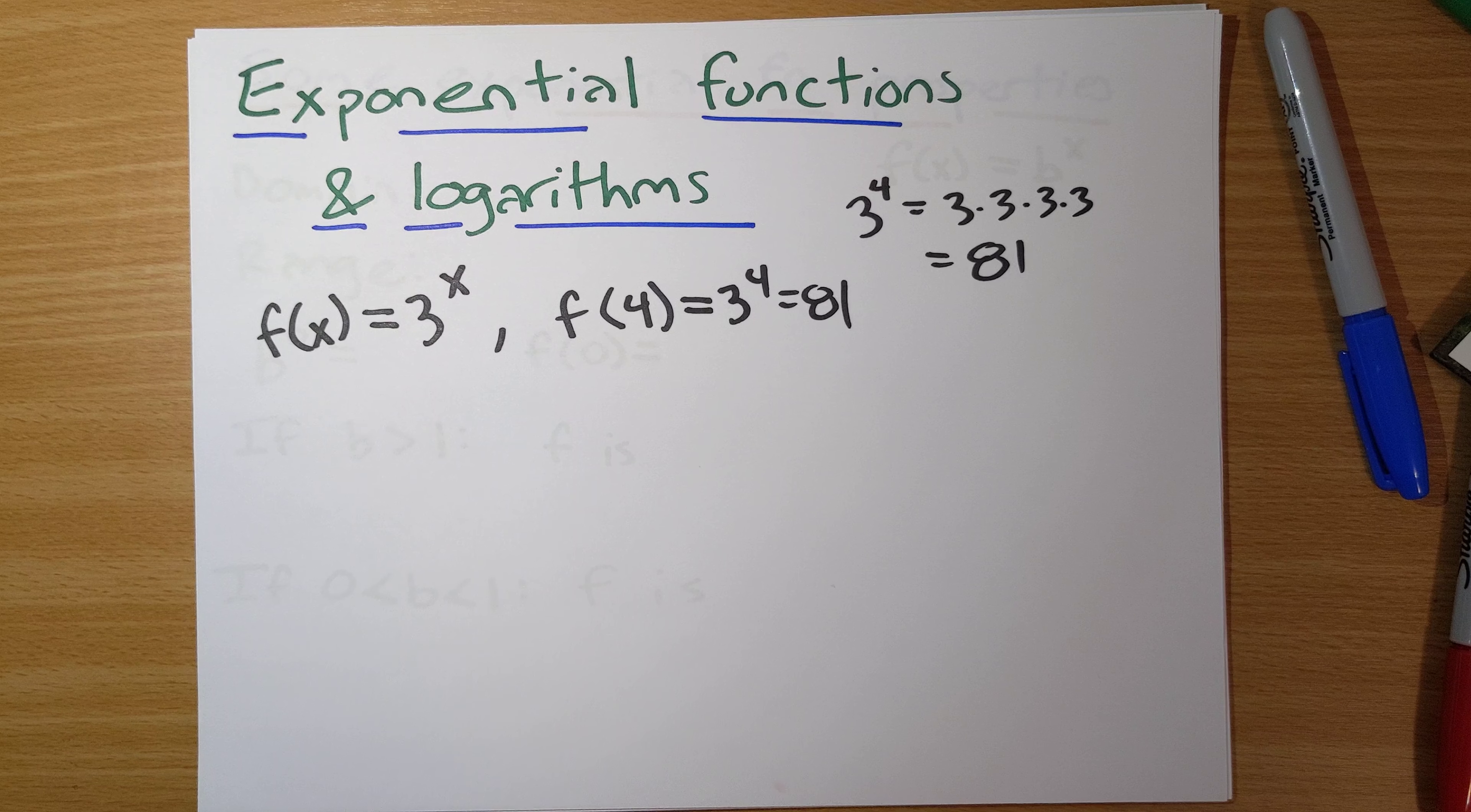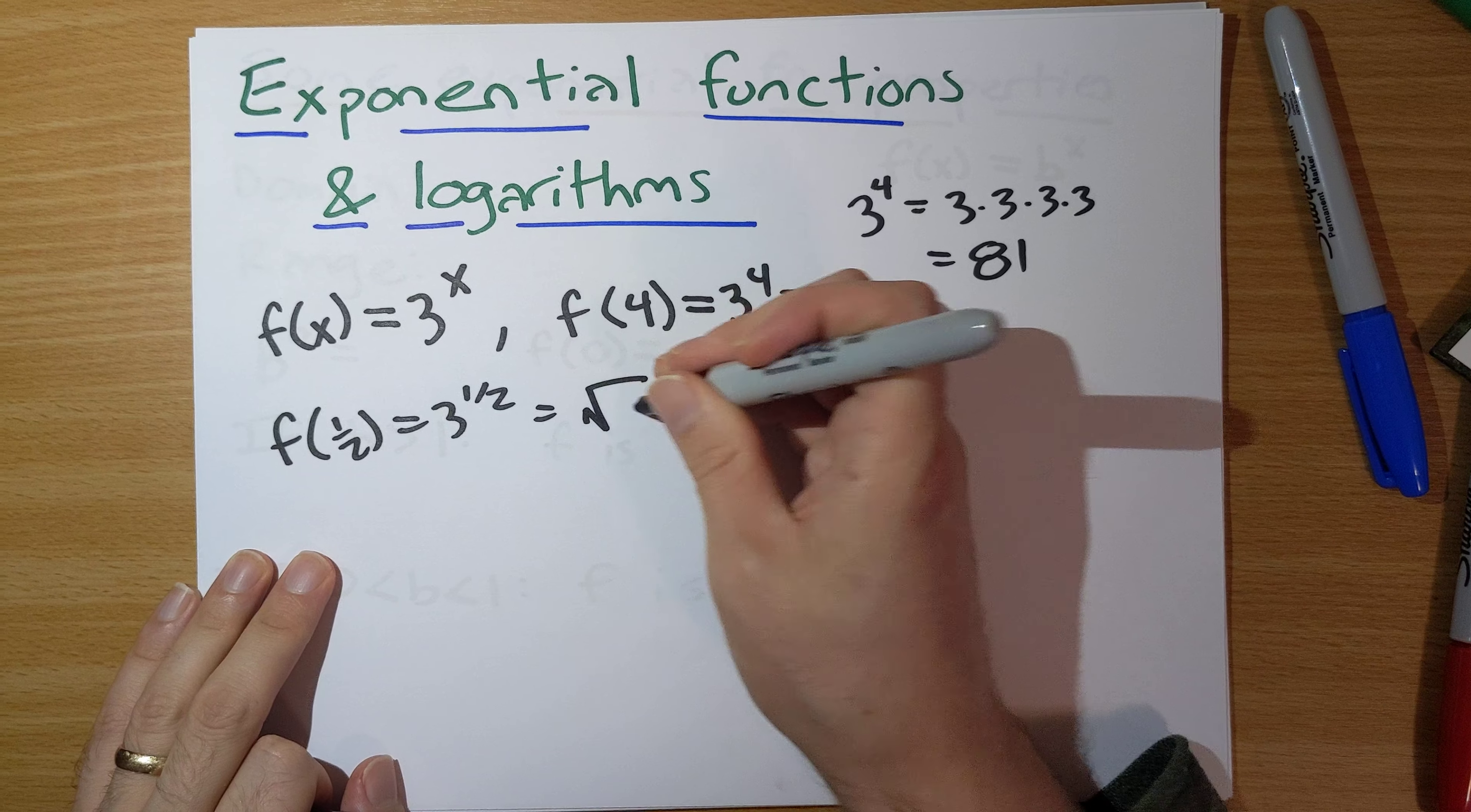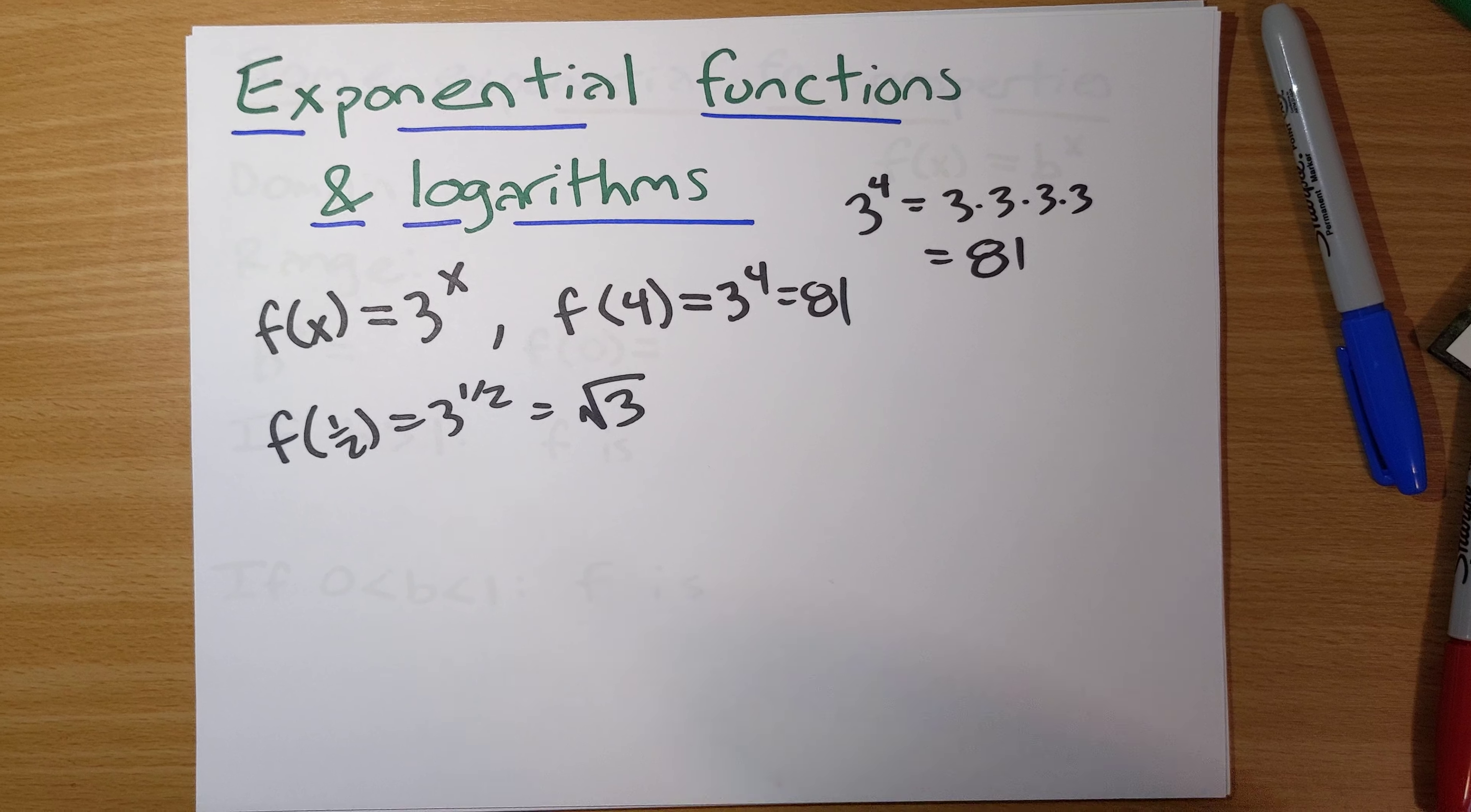This all makes sense if we are plugging in integers for x. If we were to do f of 1 half, this would be 3 to the 1 half, which would be the square root of 3. This works, and you can fill things in. I won't go into details about how to do this. You can fill things in even if x is an irrational number.